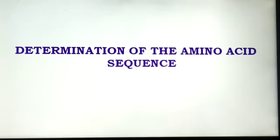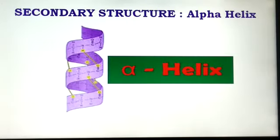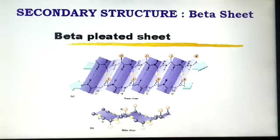Determination of amino acid sequences is carried out using Sanger and Edman reagents. For secondary structure of proteins, there are two types: alpha helix and beta sheets. Pauling and Corey proposed the alpha helix, which has 3.6 amino acid residues per turn, and the distance traveled per turn is 0.54 nanometers. It is stabilized by hydrogen bonds, and the right-handed helix is more stable than the left-handed helix. For the beta pleated sheet, also proposed by Pauling and Corey, two or more segments of fully extended polypeptide chains run in opposite directions — this is termed an anti-parallel beta sheet. Regions of beta sheet are present in many proteins, both parallel and anti-parallel in nature.